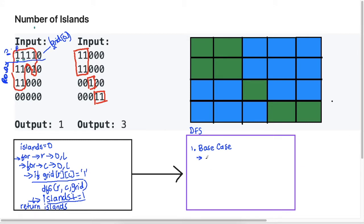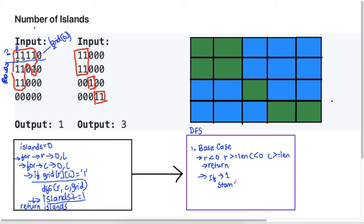We check: if the row index is less than zero or greater than or equal to the length of the grid, just return. In the else case, we check if we see a one. If we see a one, we stamp it as a zero — we do this because we don't want to return to this cell and count that one again.